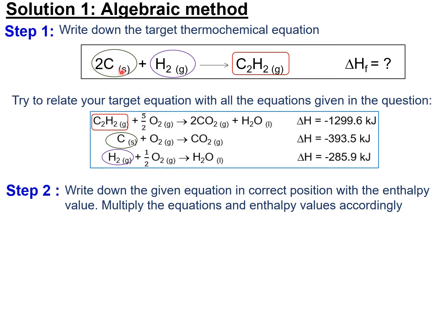Next is C2H2. C2H2's position should be on the product side. But if you look at the first thermochemical equation, C2H2 is on the reactant side, so you need to switch its position. Circle your reactants from the target thermochemical equation and relate them to the given equations. For carbon, circle carbon. For hydrogen, circle hydrogen. For the product C2H2, mark it with a box.